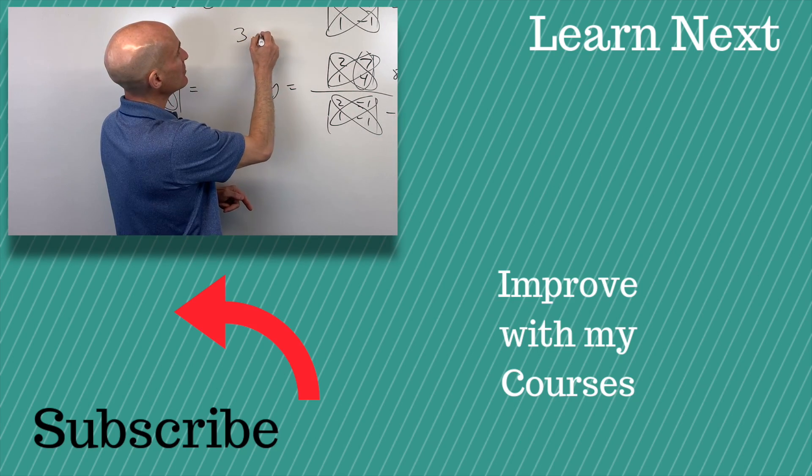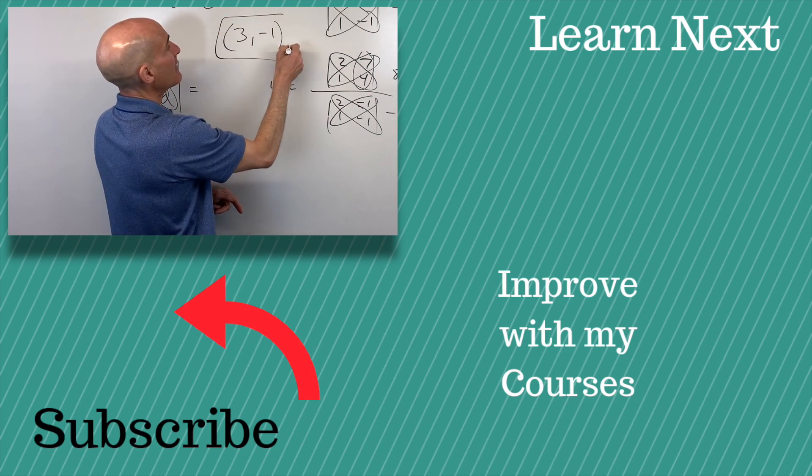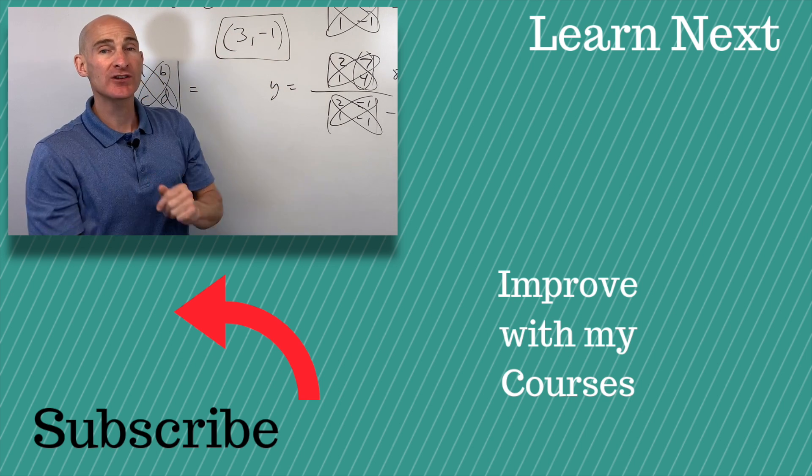So our solution is going to be 3, negative 1. And that just represents where these two lines would cross or intersect.